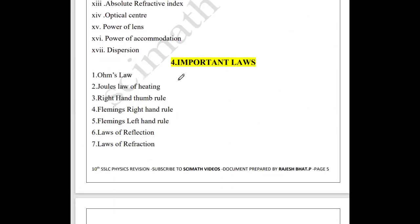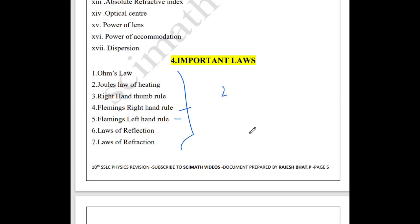Next, important laws. There are seven different laws that you should know: Ohm's law, Joule's law of heating, right-hand thumb rule, Fleming's left-hand and right-hand rules, and laws of reflection. Out of these seven, you can expect at least two in the examination.